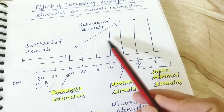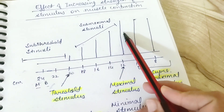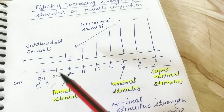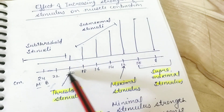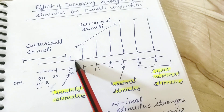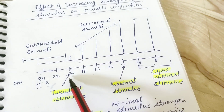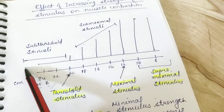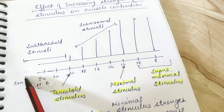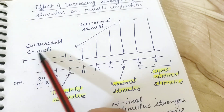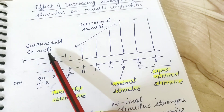Now let's understand why the heights are increasing and why they become stable. There is a stimulus strength at which the first response starts — this stimulus strength is called the threshold stimulus. Below this value, whatever strengths you have given are called sub-threshold stimuli.